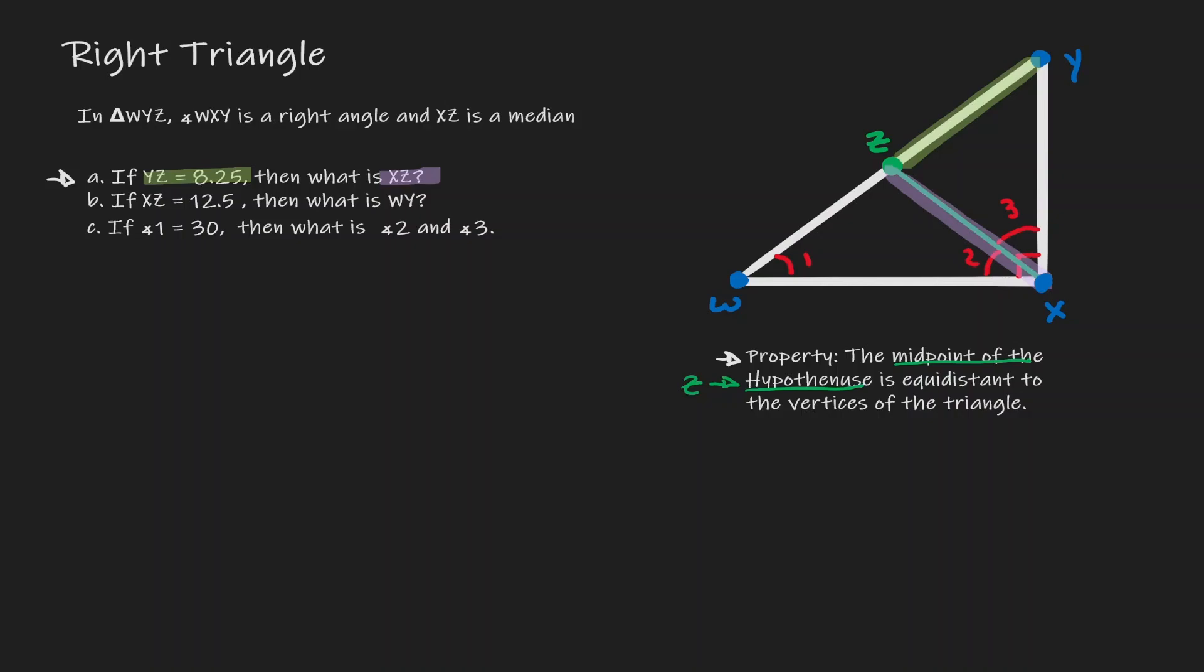Thanks to the property we remember, we know that those two sections are congruent to each other. If that is the case then we are done, because we can say that XZ has a value of 8.25.